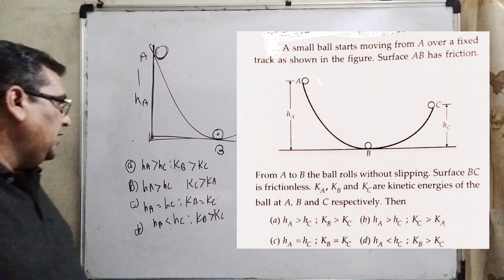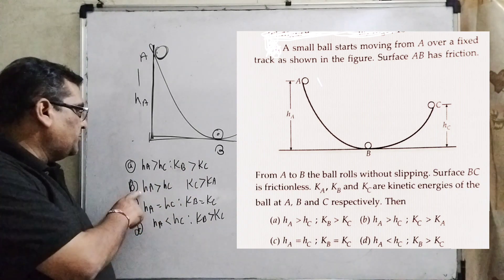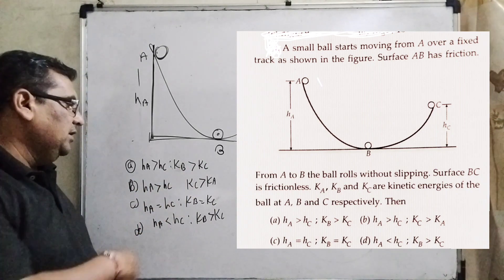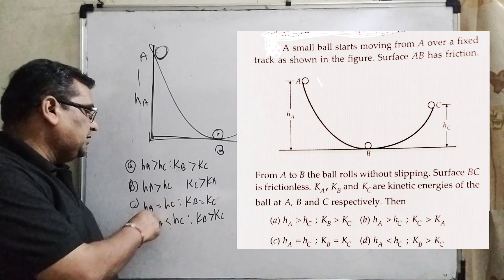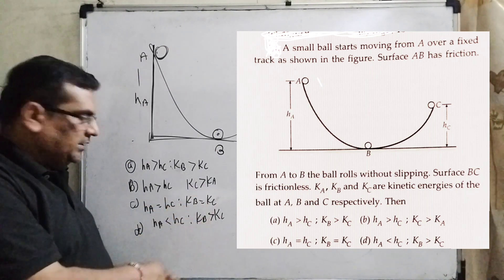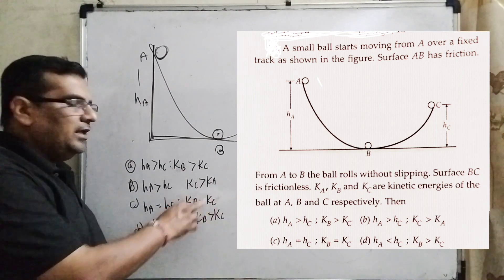Then we have given four options. Option A: HA is greater than HC and KB is greater than KC. Option B: HA is greater than HC and KC is greater than KA. Option C: HA equals HC and KB equals KC. Option D: HA is less than HC and KB is greater than KC.